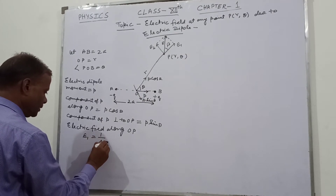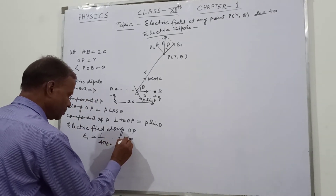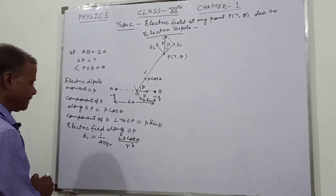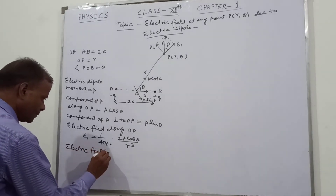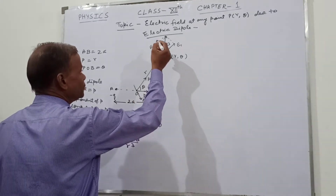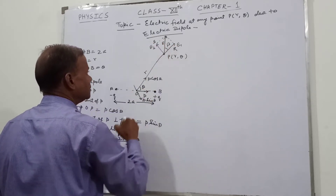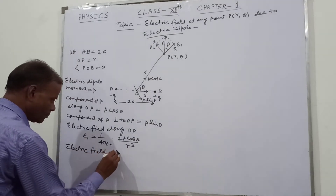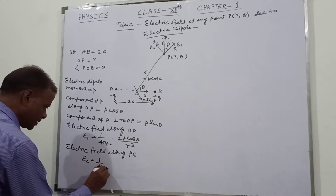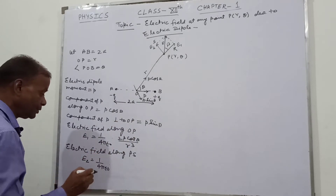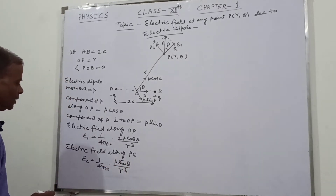Along the axis we have E1 equal to 1 over 4π epsilon_0 into 2P cos theta upon R cubed. And E2, along the perpendicular direction (bisector), is equal to 1 upon 4π epsilon_0 into P sin theta upon R cubed. E1 and E2 are mutually perpendicular to each other.